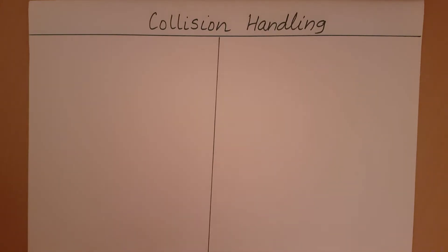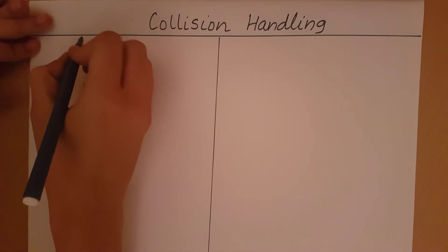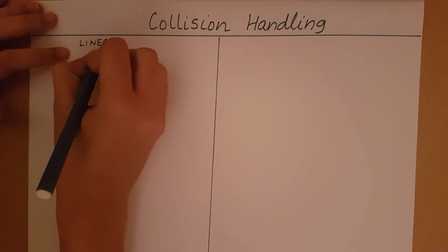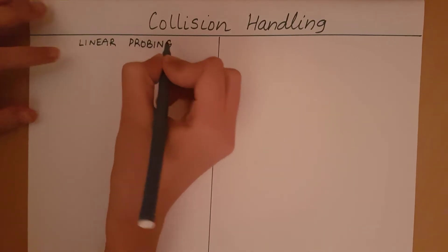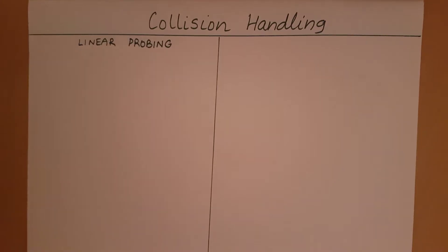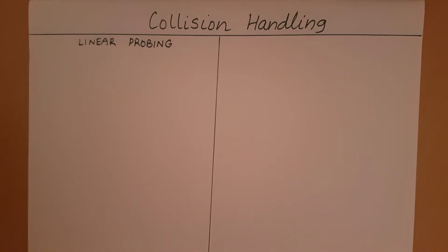In this video, we will take a look at the collision handling method called linear probing. So, how does linear probing work? When a collision occurs — that is, two distinct keys are mapped to the same hash value — the colliding element will be placed in the next circularly available table cell.